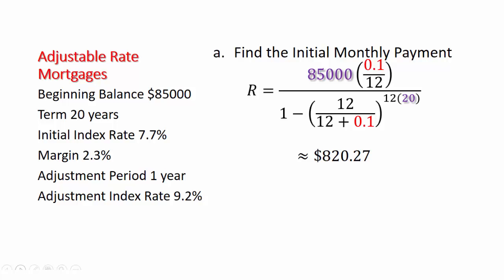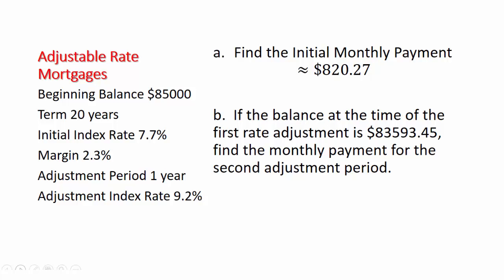Now let's look at what's going to happen at the beginning of the next adjustment period. If we wanted to figure out our balance at the end of the first year, which is the first adjustment period, that would take some time. I'm going to just go ahead and give you the value, that would be the balance, $83,593.45.